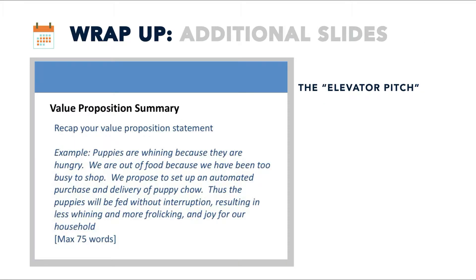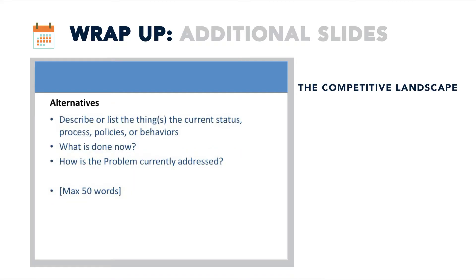If there's time, an additional slide to add would be a value proposition summary. You have outlined a deconstructed value proposition already, but it's helpful to quickly demonstrate the value proposition — this is essentially an elevator pitch. Another useful slide is the alternatives. In the commercial space, this would be called the competitive landscape. How is the problem currently being addressed? For example, if the problem is that patients are waiting too long in the waiting room, describe how the waiting room is currently being managed.